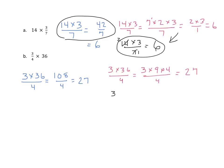To the third technique using this shortcut. We have 3 times 36 over 4. Both 36 and 4 are divisible by 4. This becomes 1. This becomes 9. And the answer is, once again, 27.